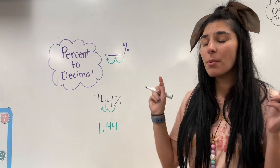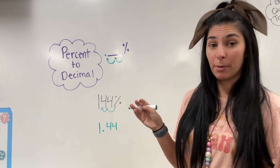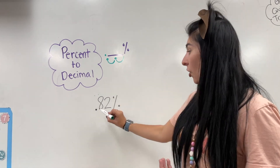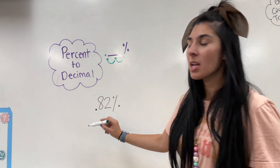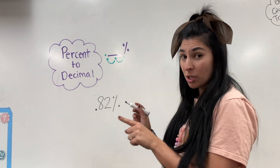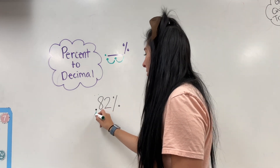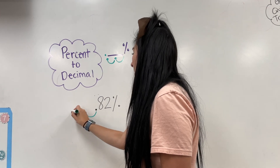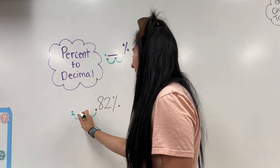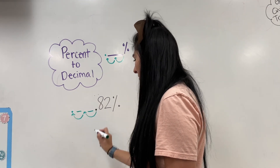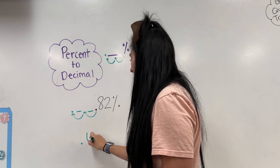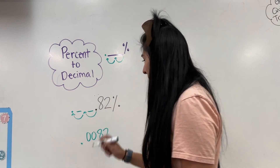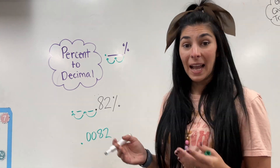What if you have a number that is smaller? Let me show you. Say I have 0.82%. It already gives me a decimal, so that's where I start, and I'm going to jump two times to the left — one, two. These spots are blank, so I'll need to add zeros. My final number will be 0.0082.